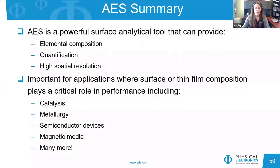In summary, today we've discussed how Auger electron spectroscopy is a powerful surface analysis technique because it can provide elemental composition and quantification at high spatial resolution. The information it provides about surfaces, nanostructures, and thin films plays a critical role in many industrial and research applications. A few of those applications we've looked at today, but of course there are many more.